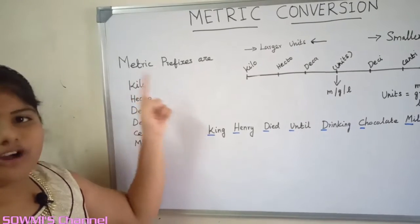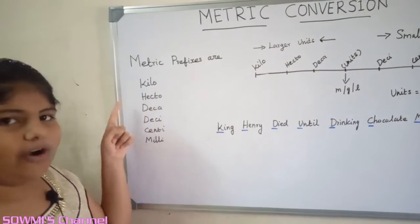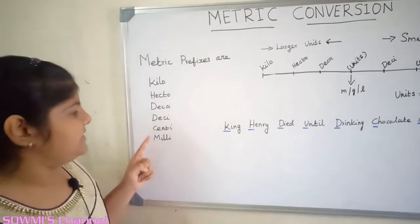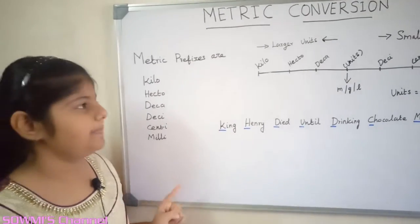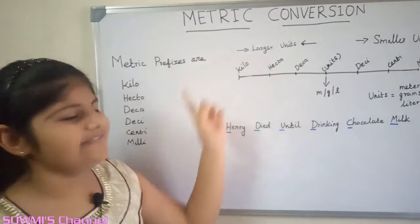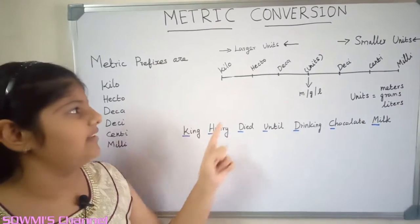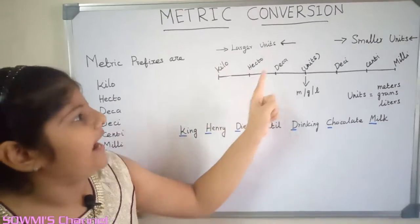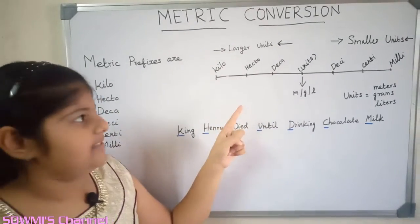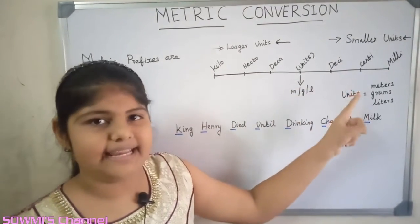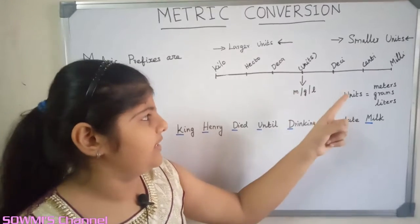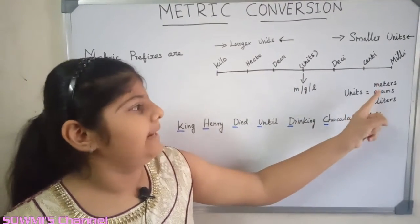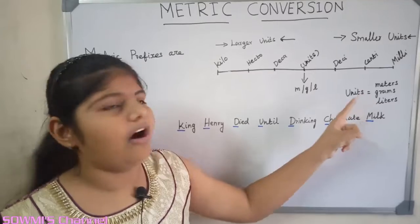The most common metric prefixes are kilo, hecto, deca, desi, centi, and milli. First we have to list the prefixes on a line. Kilo, hecto and deca are larger units. Desi, centi and milli are smaller units. Units represent meters, grams, or liters.